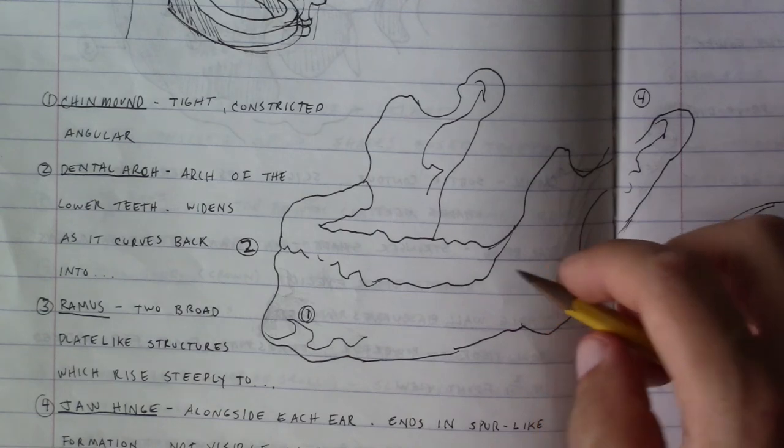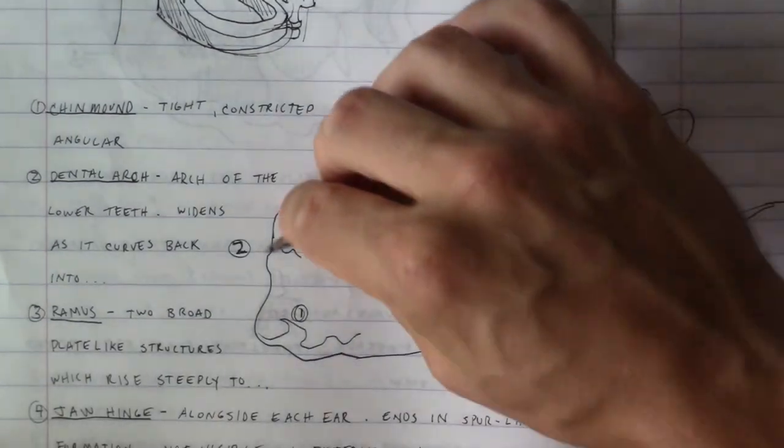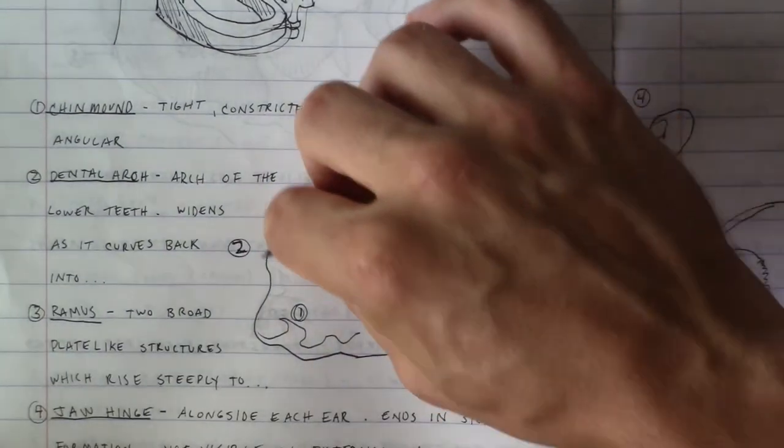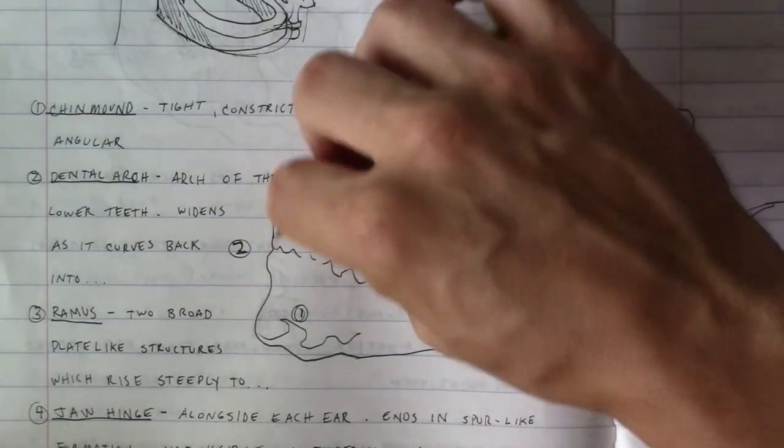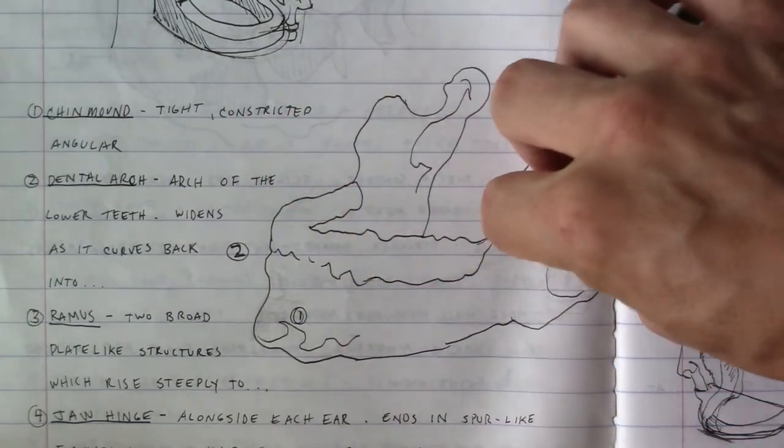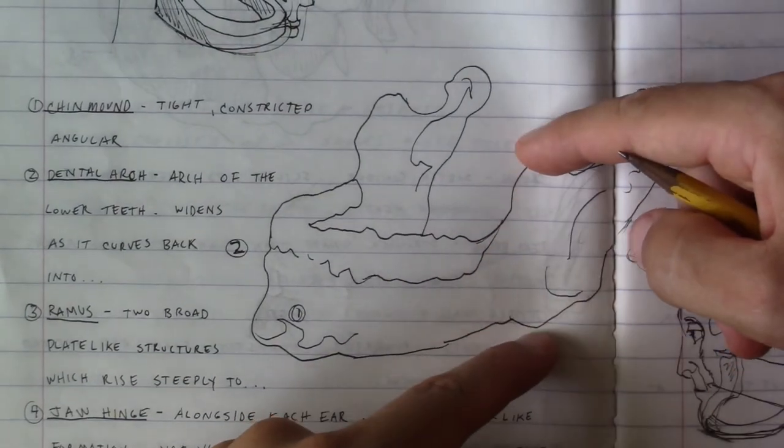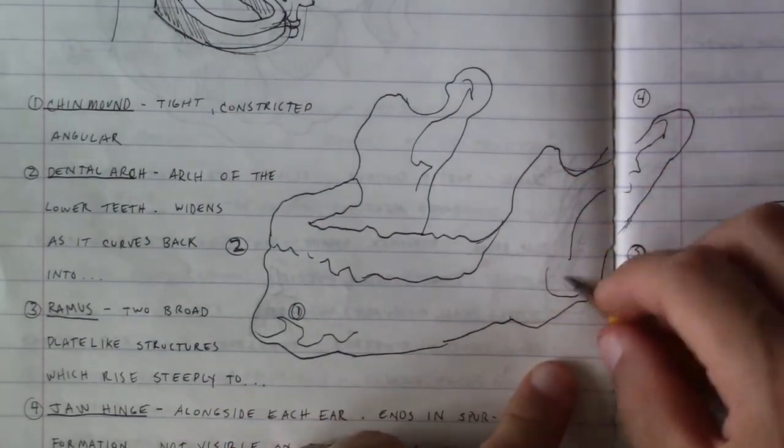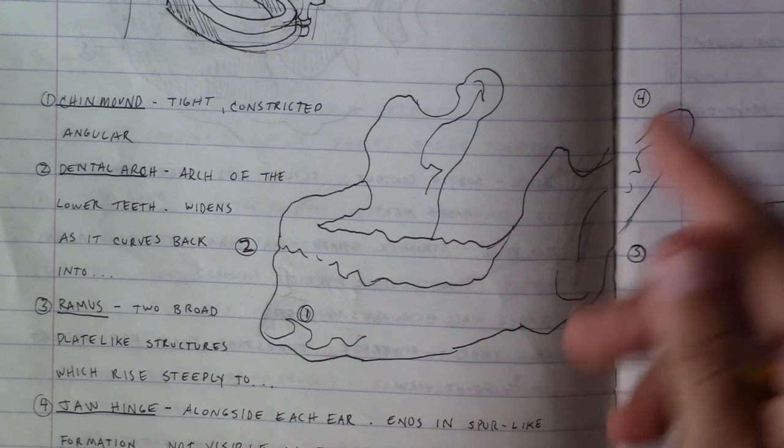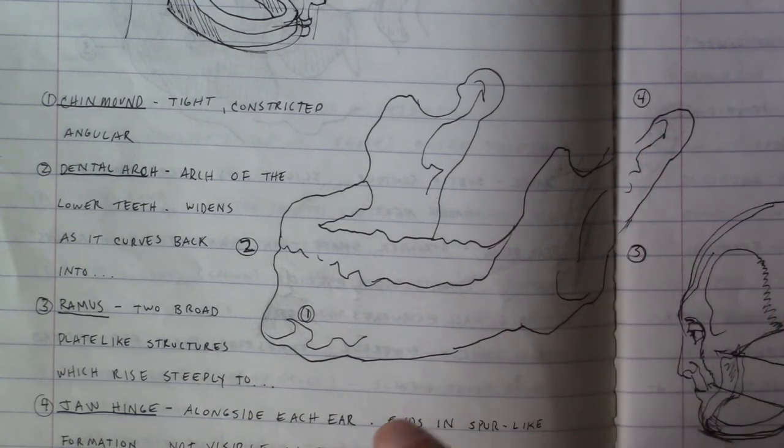Number two, the dental arch. The dental arch is another common sense one. It's just the arch of the lower teeth. And as this travels back, it connects. Well, first it widens. It widens and then connects to two broad plate-like structures called the ramus.